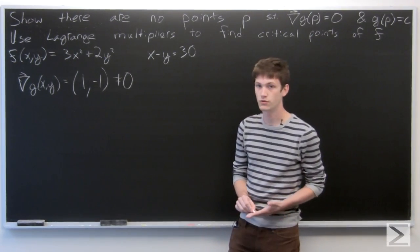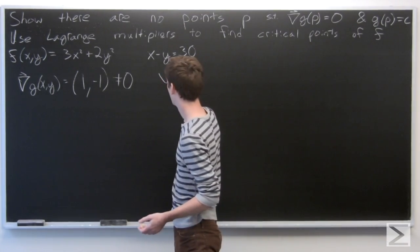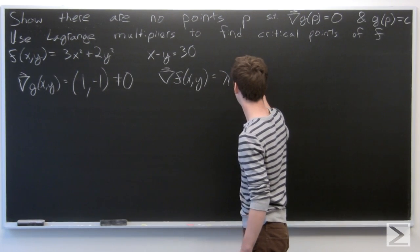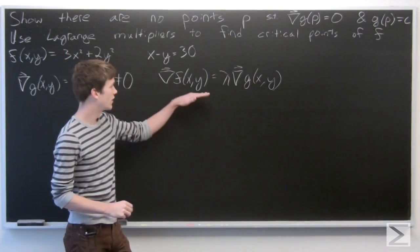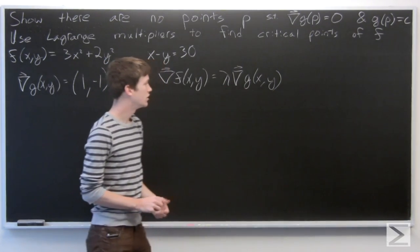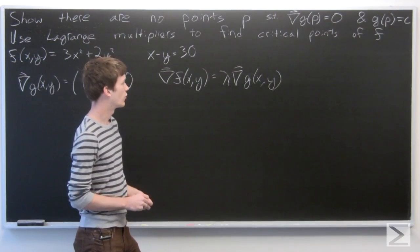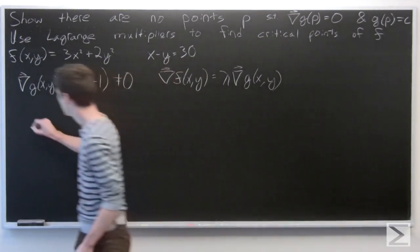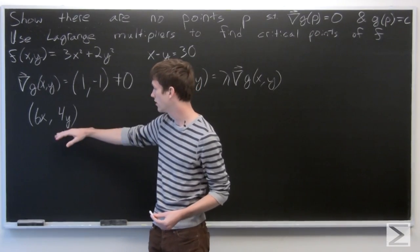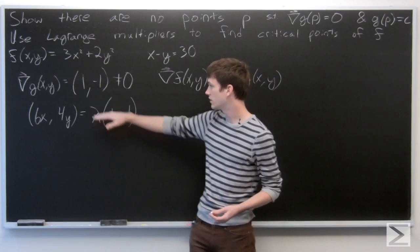Now we're going to use Lagrange multipliers to find the critical points of our function f subject to our constraint. What Lagrange multipliers tell us is that the gradient vector of f is equal to some constant lambda times our gradient vector of g(x, y). We'll take the gradient vector of f, which is (6x, 4y), and set that equal to lambda times our gradient vector for g.